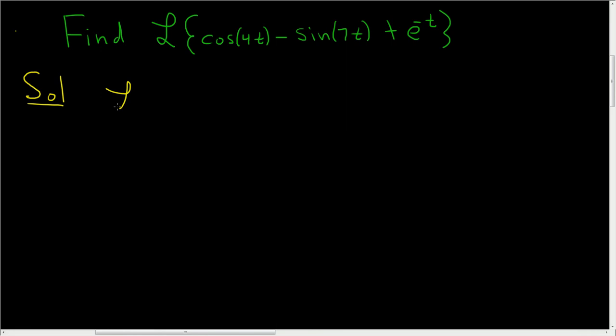So let's break it up. It's the Laplace transform of cosine 4t minus the Laplace of sine 7t plus the Laplace of e to the negative t.